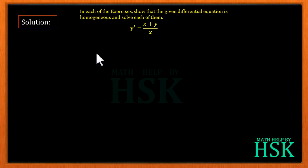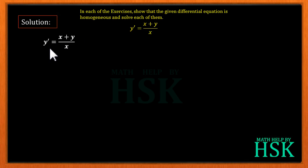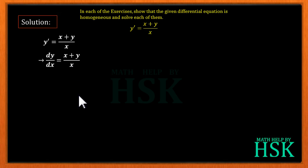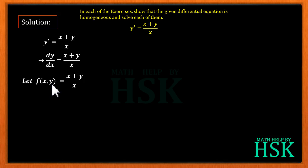First, we are going to show that this equation is homogeneous. We take y' equal to (x + y)/x, and since y' = dy/dx, we get dy/dx = (x + y)/x. We assume that f(x, y) = (x + y)/x, which is a function of x and y.